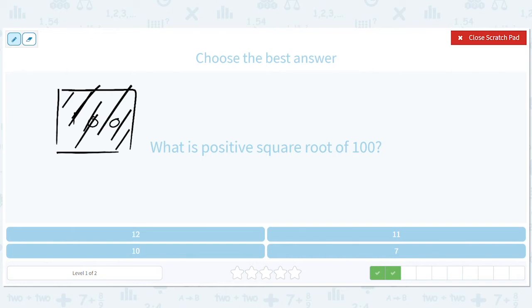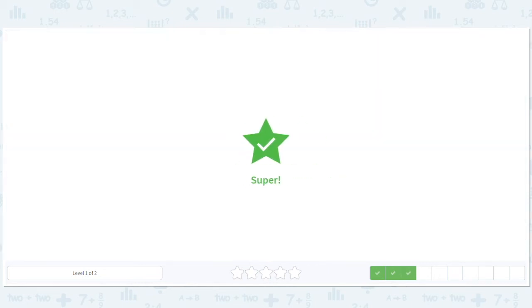Maybe that's like a bathroom or something. So you've got 10 and 10, and 10 times 10 is equal to 100. So 10 is a positive square root.